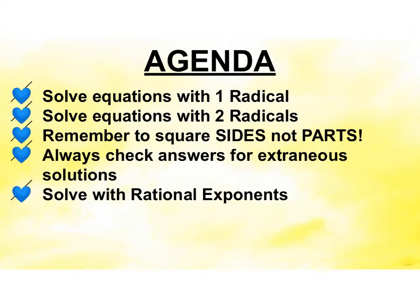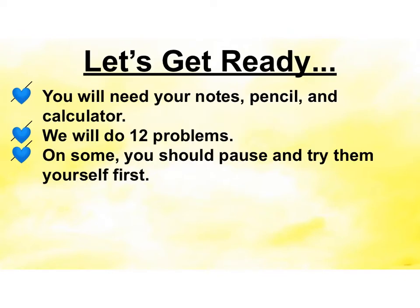On our agenda, we're going to solve equations with one radical and equations with two radicals. We need to remember to square sides and not parts. You always have to check your answers for extraneous solutions, and we'll make sure we know how to solve with rational exponents. You need your notes, pencil, and calculator. We're going to go through 12 problems. On some of them you should pause and try them first yourself.